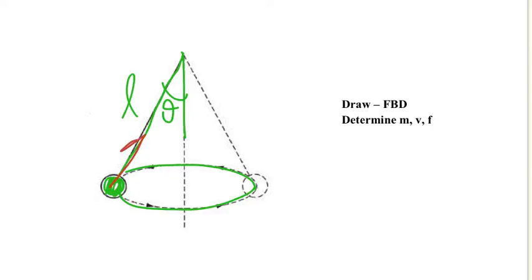Finally, the tension is defined as T and we are going to draw the free body diagram and determine mass, speed and frequency.